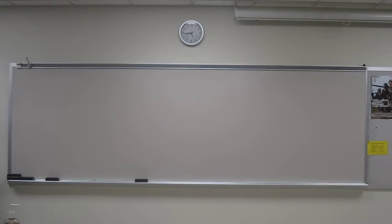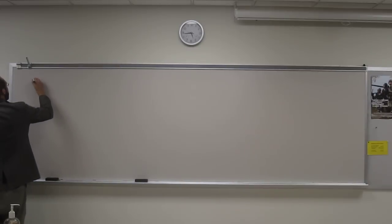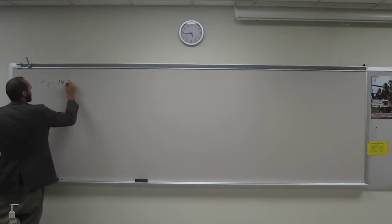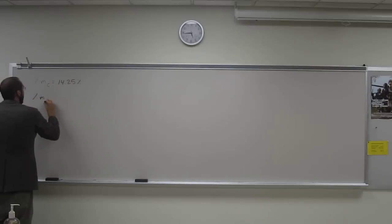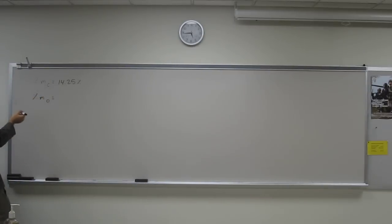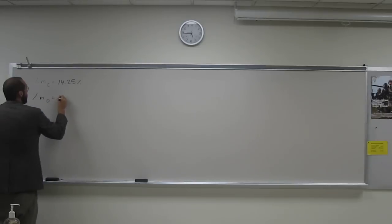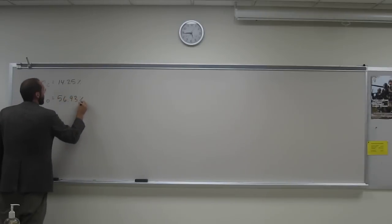Okay, so notice those are percentages by mass. So let's write down what we've got. It says, percent mass of carbon is 14.25%. Percent mass of oxygen is 56.93%.